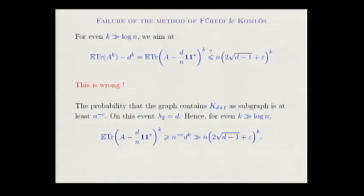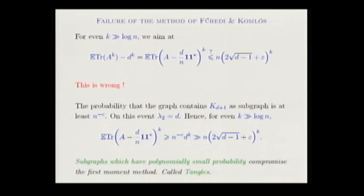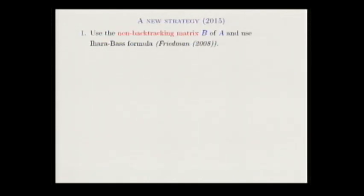On this event, the trace is at least n^{-c} — the probability the graph is disconnected — times d^k. Since k is much larger than log n, d^k kills any polynomial factor. The same obstruction applies to the non-backtracking matrix. So the first moment method cannot work; you need additional massage. Friedman proposed a new strategy: the first step was already known in 1991 — use the non-backtracking matrix instead of the adjacency matrix.